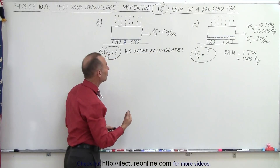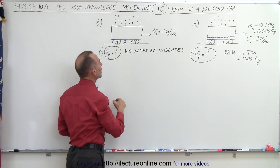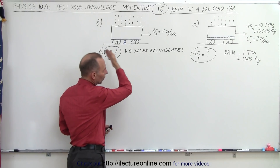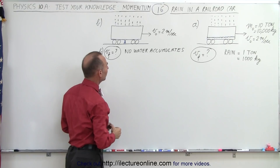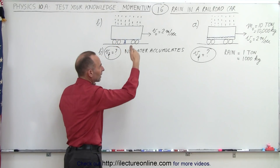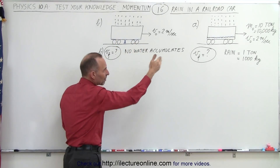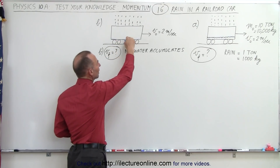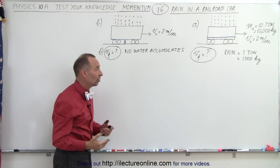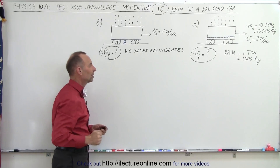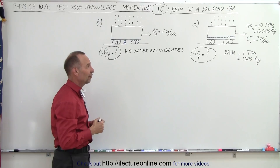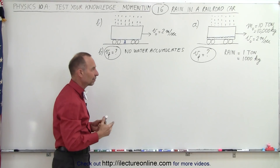The second case is where we have a small outlet, so the railroad car is still moving at two meters per second and it's still raining. It collects the same amount of rain in the same amount of time, but now instead of the rain accumulating inside the car, it runs out. The question is: what is the final velocity in that case? There is actually a slight difference, so let's figure that out.